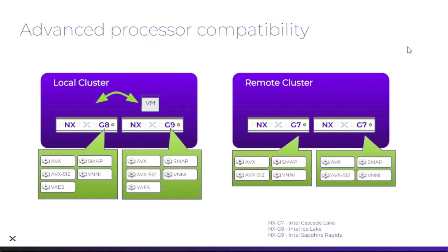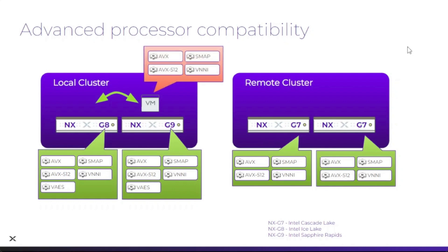In this example the remote cluster has NXG7 nodes corresponding to Intel's Cascade Lake processor generation. VMs created without advanced processor compatibility enabled could not migrate from the local cluster to the remote cluster, but with advanced processor compatibility you can further refine which processor generation to associate with a VM and enable seamless cross-cluster live migration to the remote cluster.